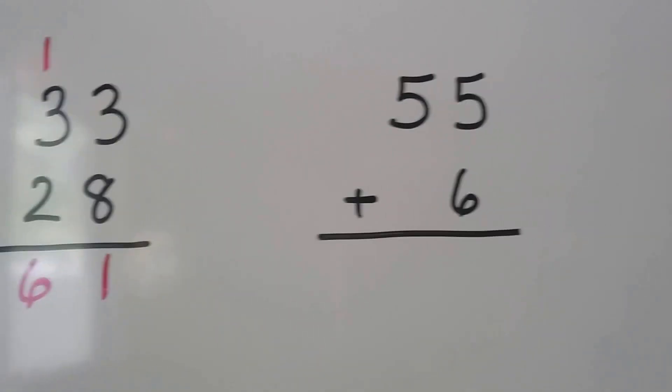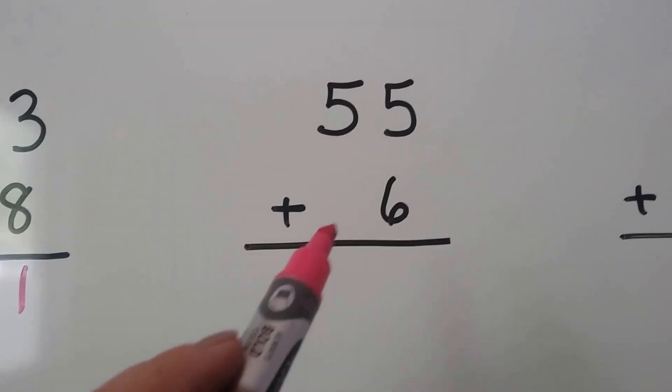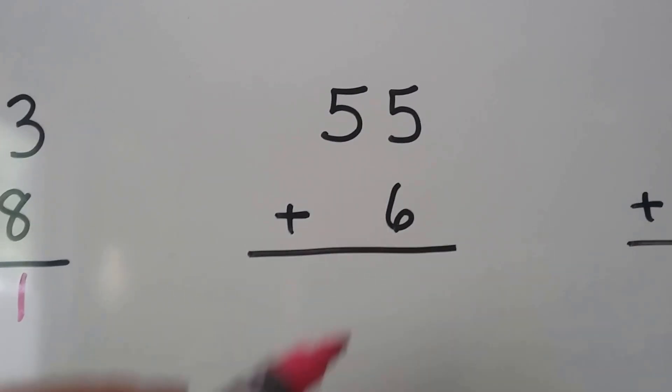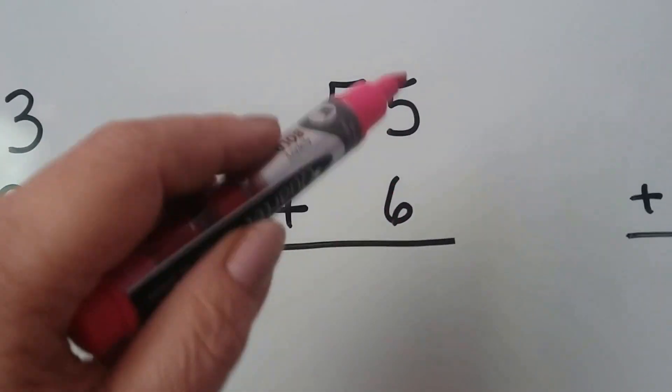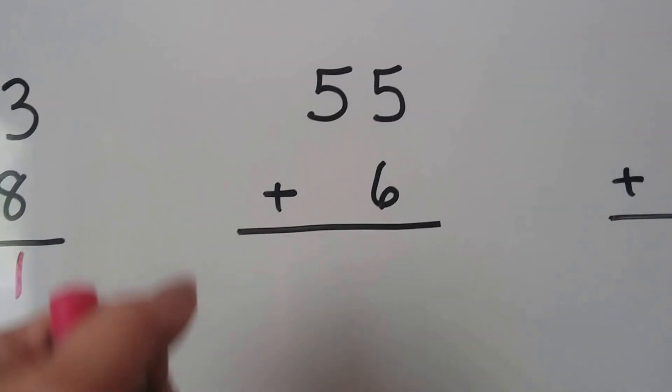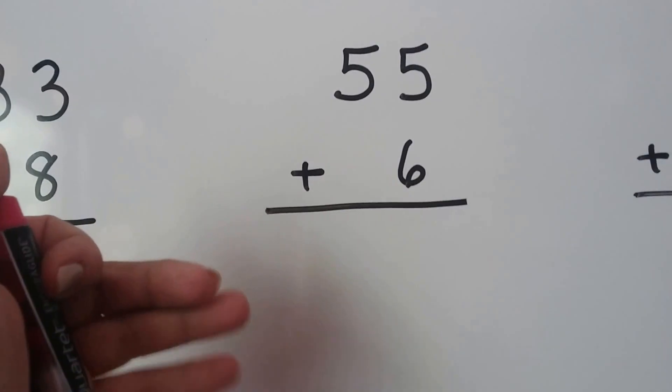Let's do another one. Now look, we just have a 6 here. We don't have anything in the tens place, but that's okay. We add it the same way. We start with the ones place. We start with the larger number and count on: 5, 6, 7, 8, 9, 10, 11.